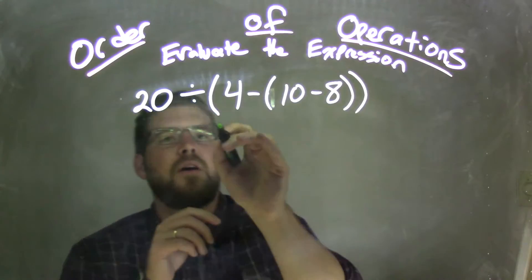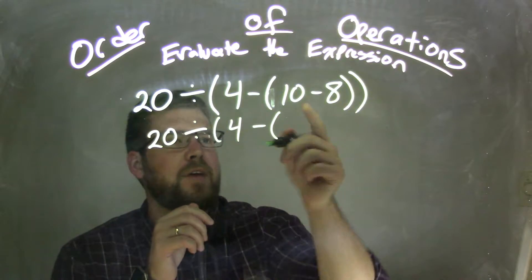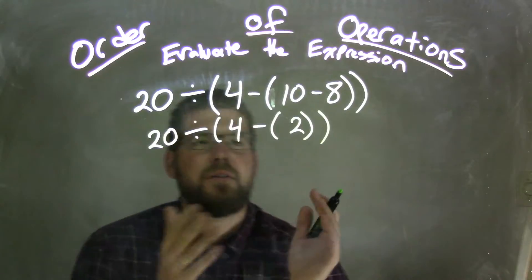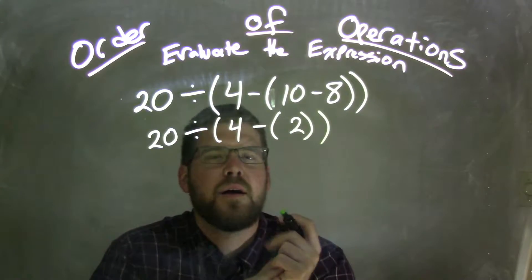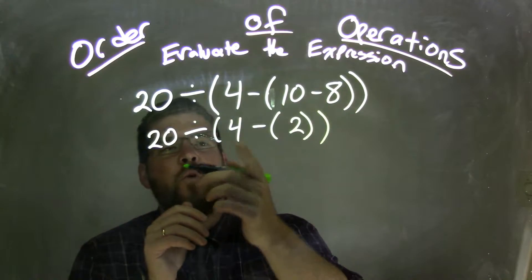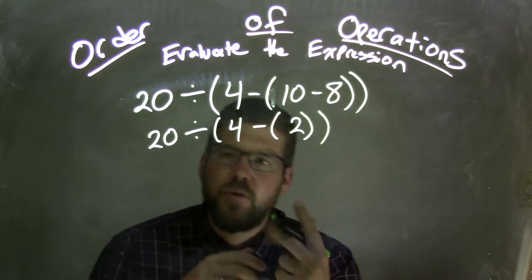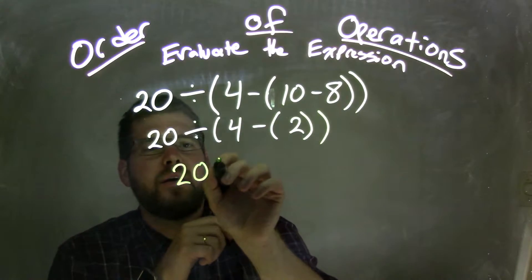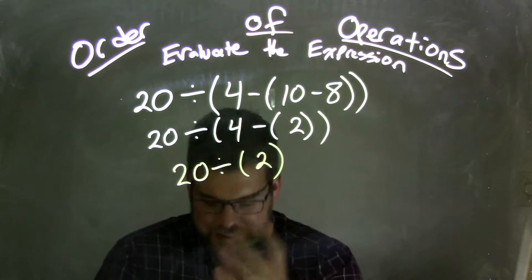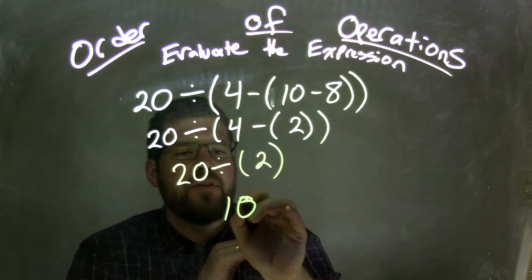10 minus 8 is 2. So, we bring down everything: 20 divided by 4 minus 10 minus 8, which is 2. And now we can deal with the other set. There's nothing else in this parentheses left of the 2, so we can get rid of the parentheses there. Now we have 4 minus 2 because they're in the next set of parentheses. 4 minus 2 is 2, so now we're left with 20 divided by 2, which is, of course, 10. So, 10 is our final answer here.